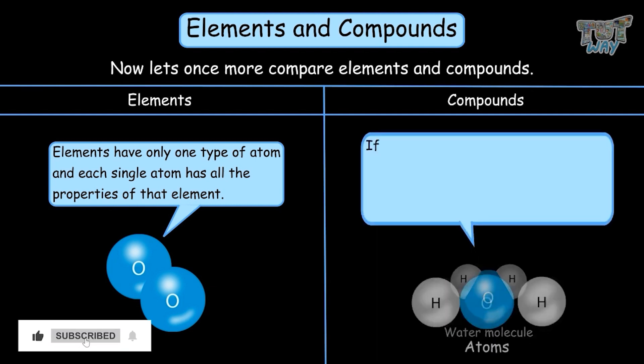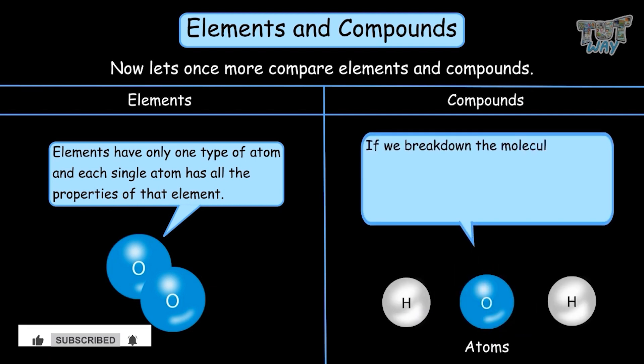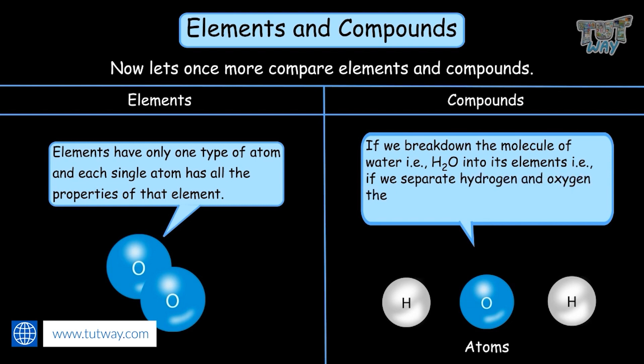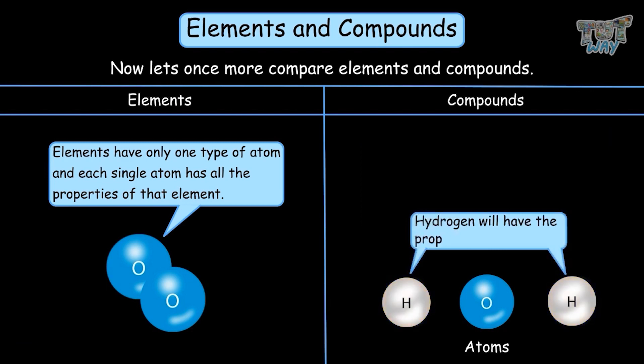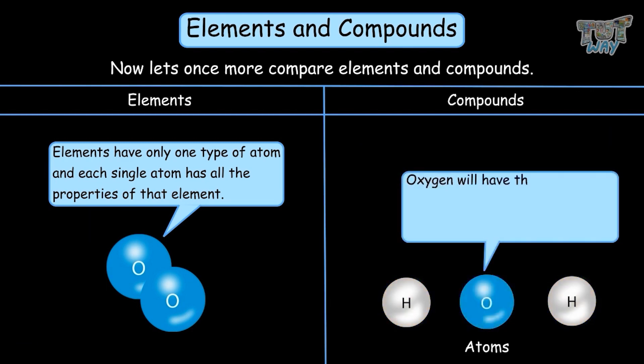And if we break down the molecule of water, H2O, into its elements—if we separate hydrogen and oxygen—these elements will not have properties of water. Hydrogen will have the properties of hydrogen and oxygen will have the properties of the oxygen element.